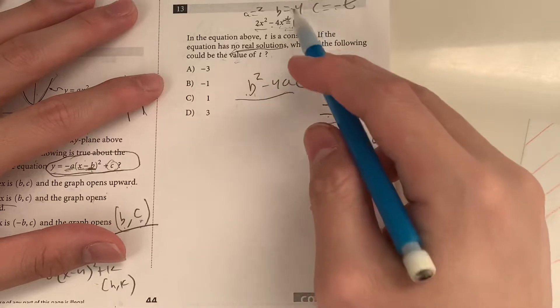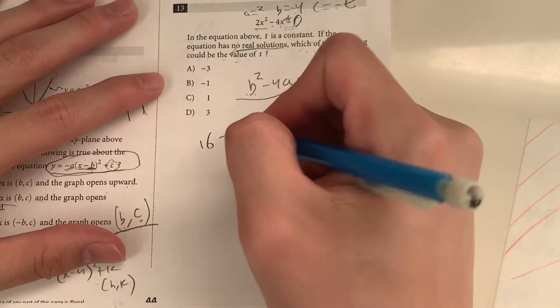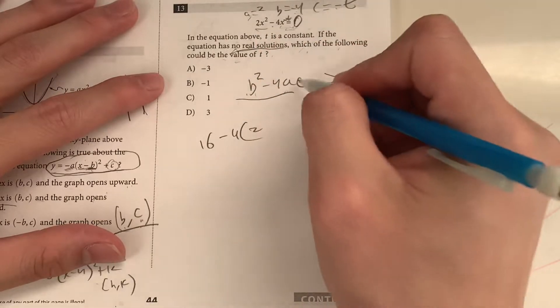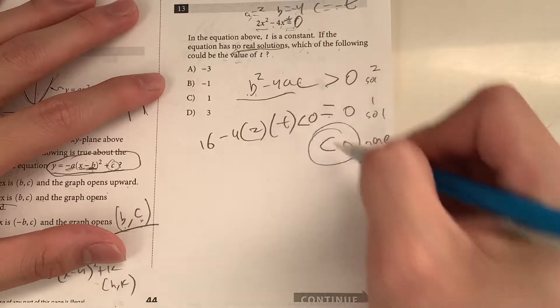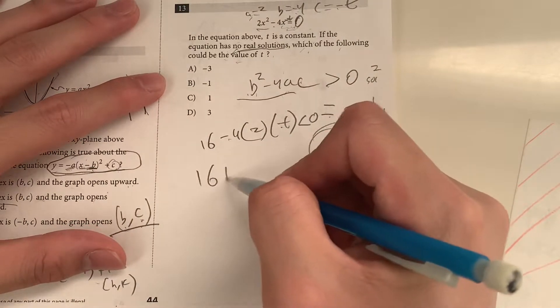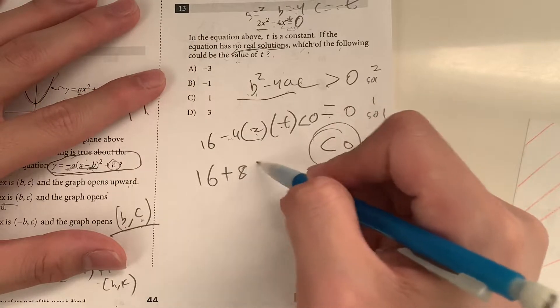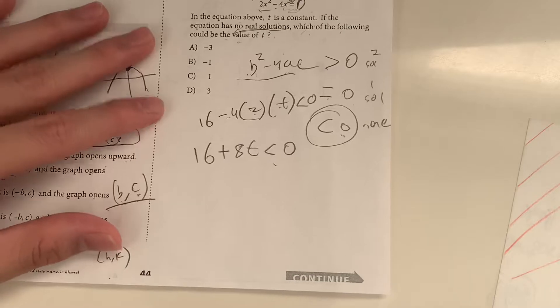Okay, now B squared is negative 4 squared, which is 16, minus 4 times A, which is 2, times C, which is negative T. And we need that to be less than 0, right? So 16 simplify. Negative times negative is positive. So that's going to be plus 8T is less than 0. So okay, which of the following values will give us that? Looking at your answer choices,